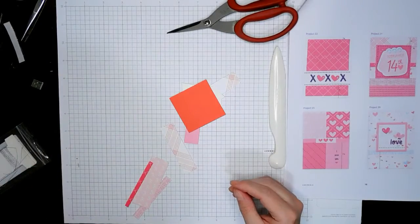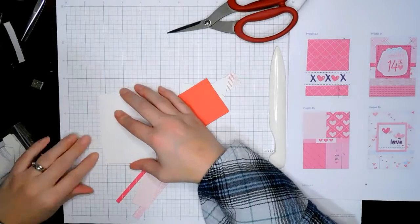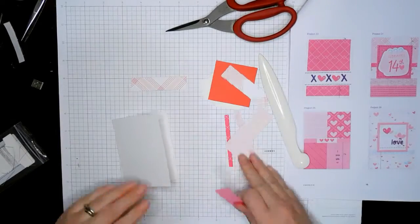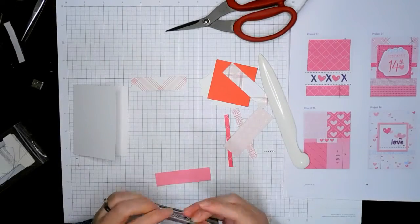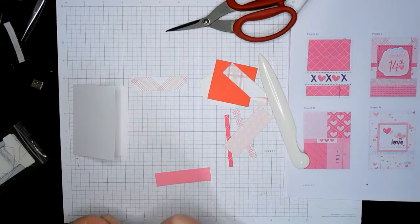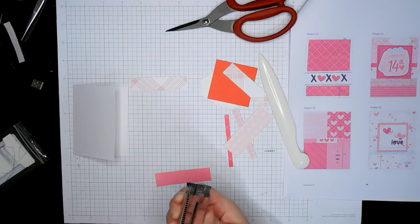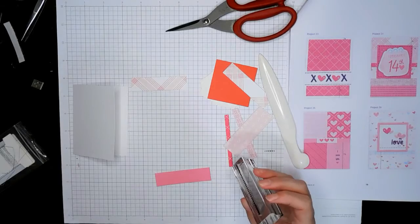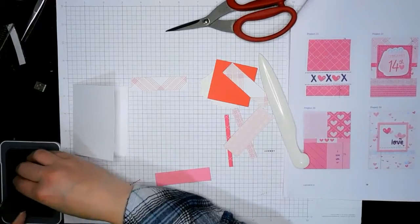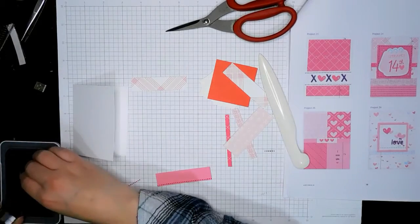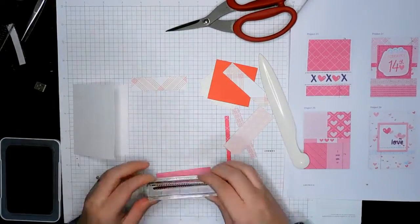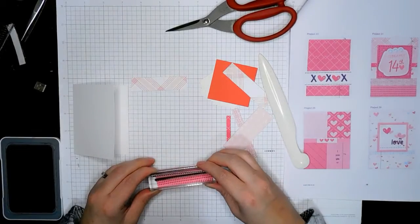I'm going to get started on the next one. This is one that is pretty simple. I think the hardest part is lining up the stamped part on this pink piece here.